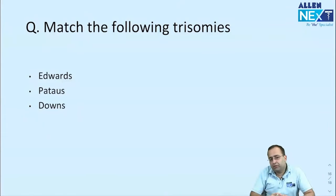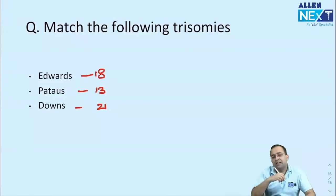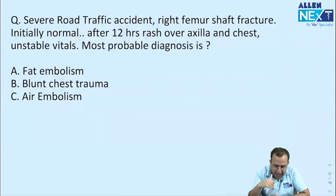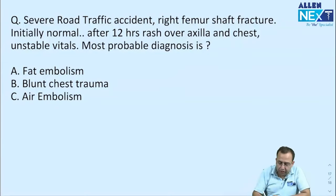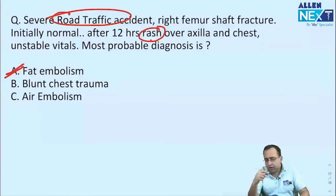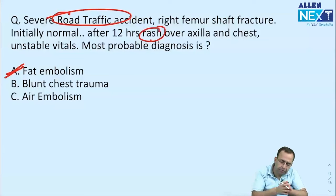Trisomies question — a match the following. Down syndrome is trisomy 21. Patau syndrome has T in it — trisomy 13. Edwards syndrome is trisomy 18. Simple and straightforward. Lastly, a patient after a severe road traffic accident — 1 to 3 days later develops rash and dyspnea with unstable vitals. This is the classical history of fat embolism syndrome.